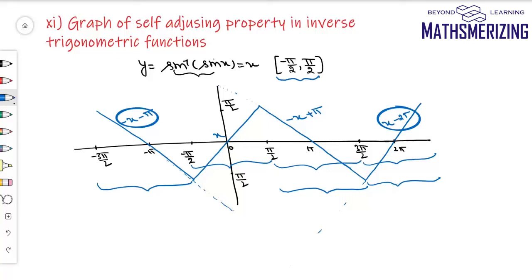All I need to do is know the principal value range of the function, draw the y = x line in that range, and then create the zigzag structures extending outward.